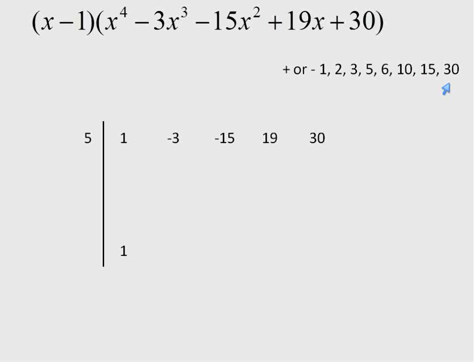I'm going to take the coefficients from this: 1, negative 3, negative 15, positive 19, positive 30 down here. And I'm going to search for factors from my final number, factors of 30, which I have listed here. But I'm going to continue working. I'm going to pick a number about the middle. This time I'm picking 5. I already know 6 doesn't work.